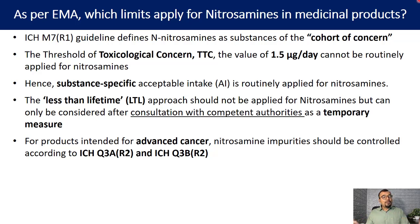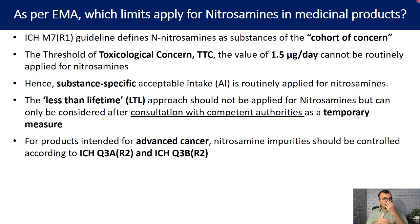For a product intended for advanced cancer, nitrosamine impurities should be controlled according to ICH guideline Q3A or Q3B. If the product itself is carcinogenic, there is no point in controlling the nitrosamines under the acceptable intake limits given in the guideline.